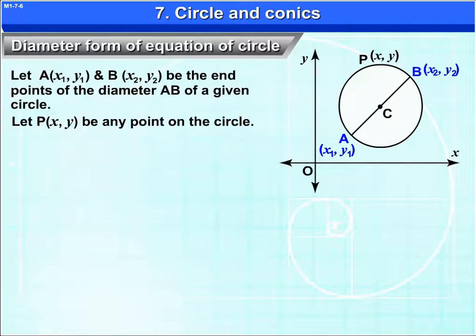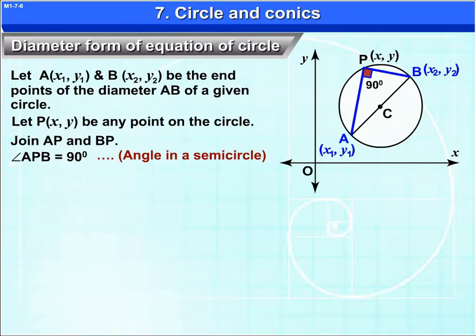Let P(x, y) be any point on this circle. Join AP and BP. Angle APB is equal to 90 degrees as it is an angle in a semicircle.